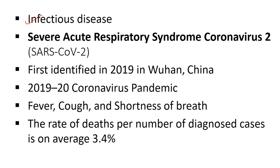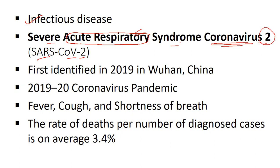COVID-19 is an infectious and communicable disease caused by a pathogenic virus known as Severe Acute Respiratory Syndrome Coronavirus 2, or SARS-CoV-2. SARS refers to Severe Acute Respiratory Syndrome, caused by the group of viruses called coronaviruses. These coronaviruses belong to the family Coronaviridae, and this coronavirus 2 belongs to the genus beta-coronaviruses of Orthocoronaviridae.